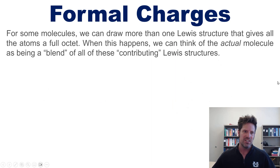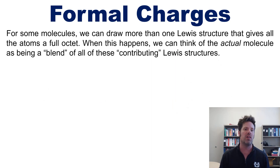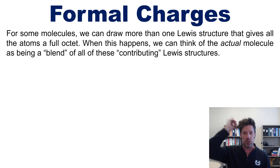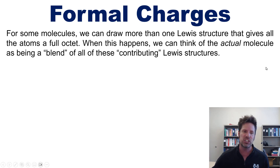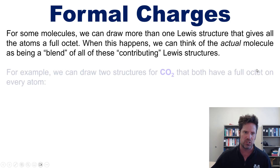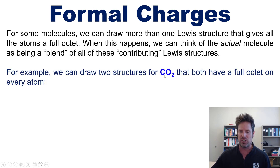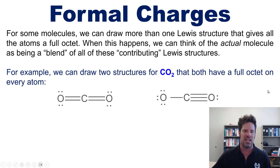In this video I'm going to teach you about formal charges. For some molecules we can draw more than one Lewis structure that gives all the atoms a full octet. To review how to draw Lewis structures, I invite you to click the link in the description beneath this video. When this happens, we can think of the actual molecule as being a blend of all of these contributing Lewis structures. For example, we can draw two Lewis structures for carbon dioxide that both give a full octet to every atom.